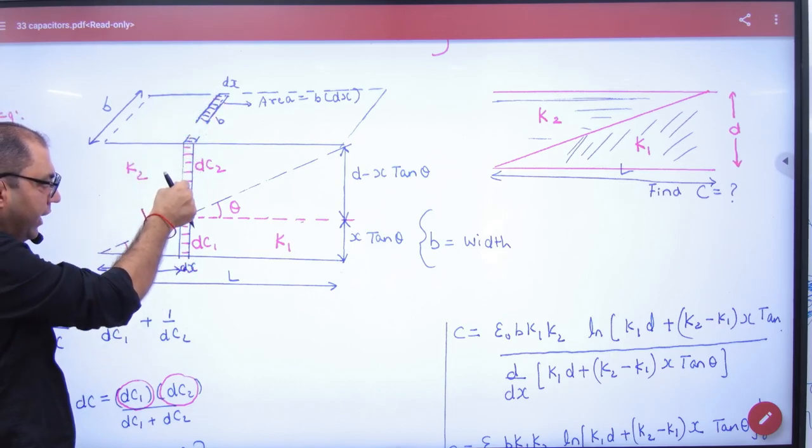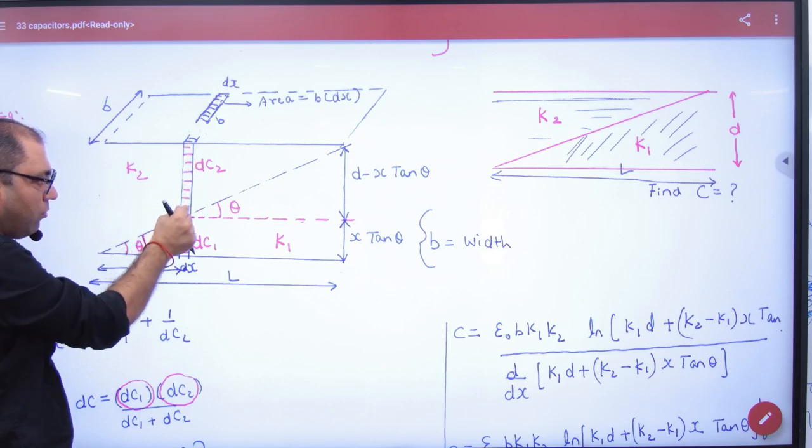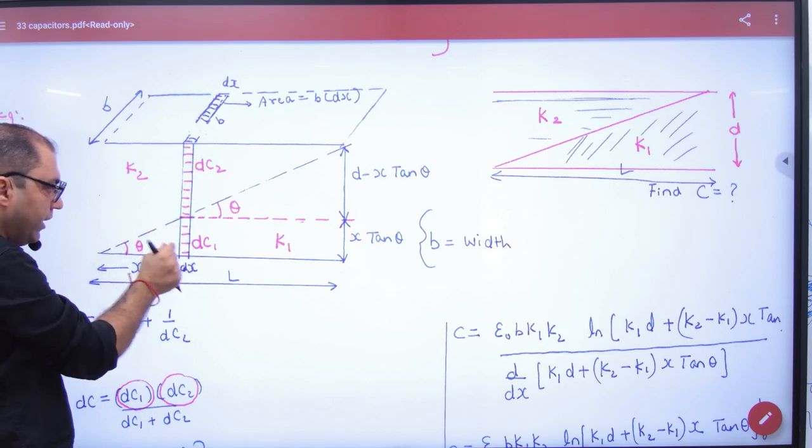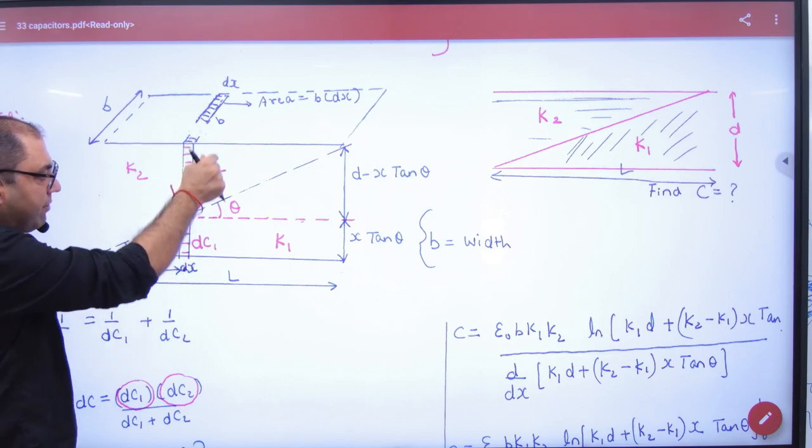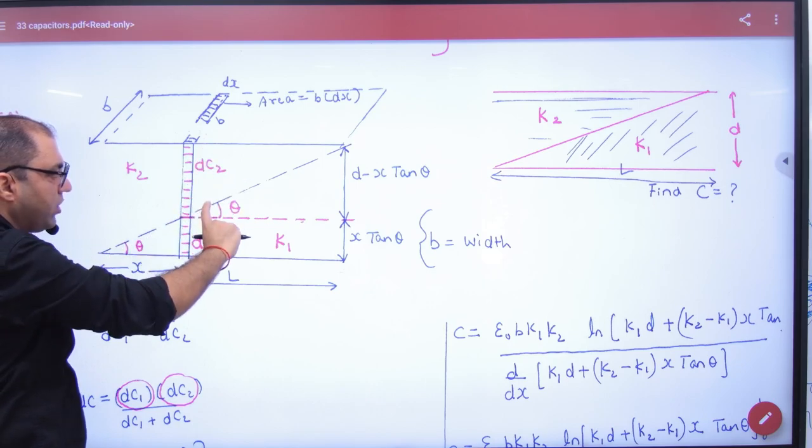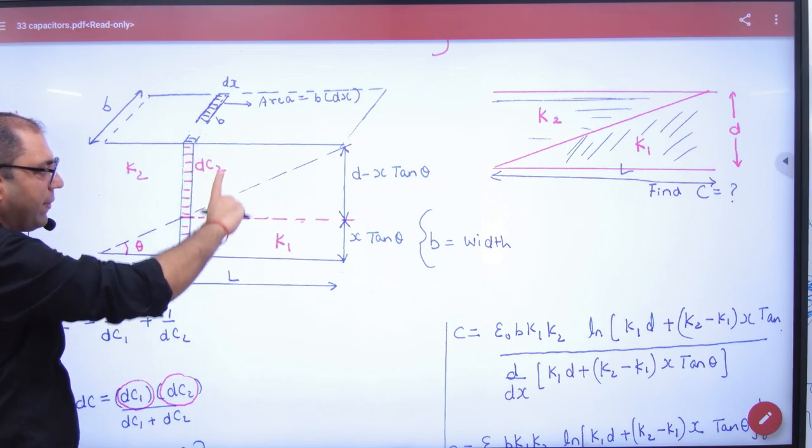So you can see that this capacity will become dc2, small capacitance, and this will become dc1. If you go right, this will be reduced and this will be increased. So the capacity is changing.